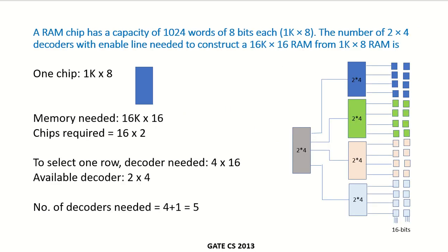A RAM chip has a capacity of 1024 words of 8 bits each. 1024 words is 2 to the power of 10, that means 1K into 8. The number of 2 by 4 decoders with enable line needed to construct a 16K by 16 RAM from the available 1K by 8 RAM chips.